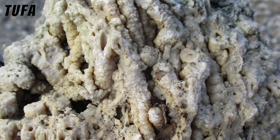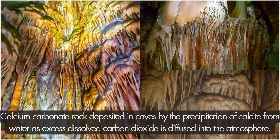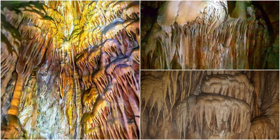Tufa: Tufa is a variety of limestone formed when carbonate minerals precipitate out of ambient temperature water. Geothermally heated hot springs sometimes produce similar but less porous carbonate deposits, which are known as travertine. Dripstone: Calcium carbonate rock deposited in caves by the precipitation of calcite from water as excess dissolved carbon dioxide is diffused into the atmosphere.